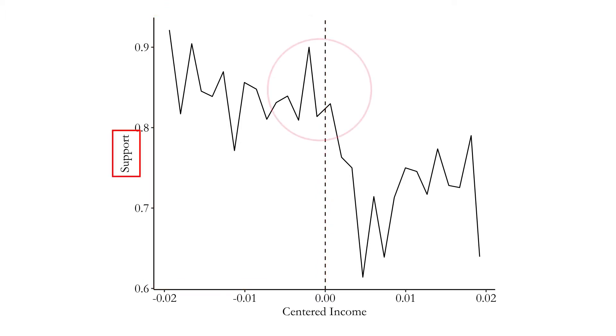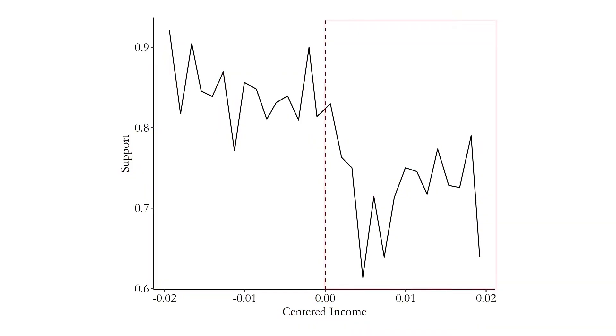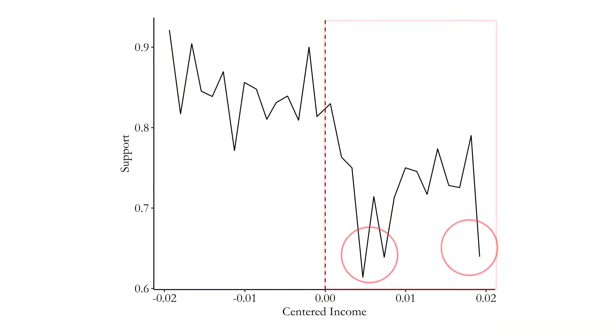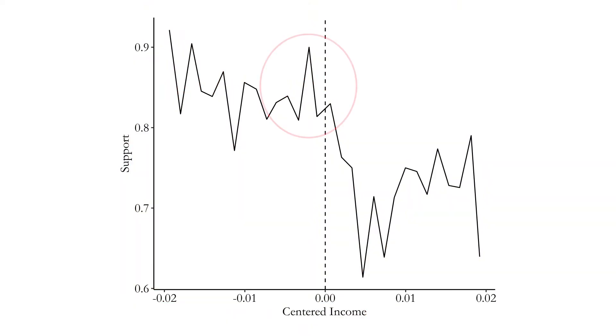Here is the graph showing the results. To qualify for the treatment, you had to be below the income cutoff. You can see that support for the government jumps quite a bit right at the cutoff, which implies that getting a check from the government does indeed make you support it more. On the right side of the cutoff where people are not treated, we see considerably lower levels of support, smoothly changing along the income axis. Then as soon as you dip below the dashed line, government support jumps immediately — just as you'd expect if the treatment is responsible for increasing government support.